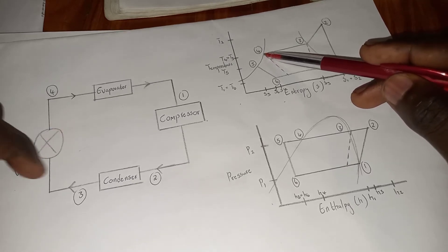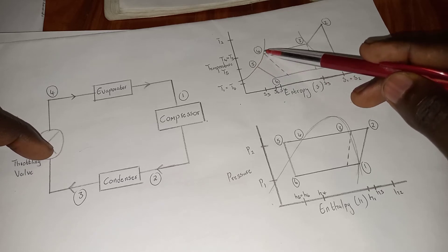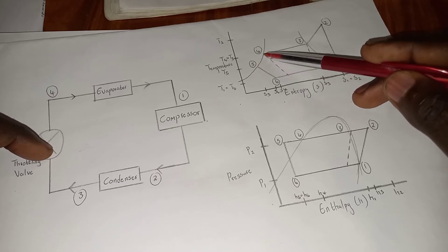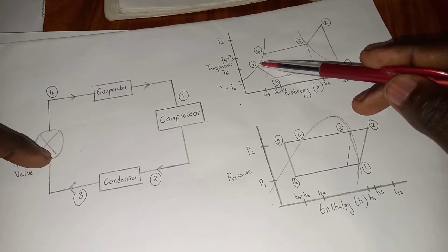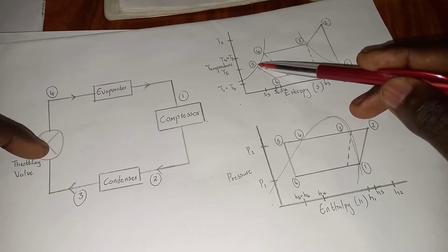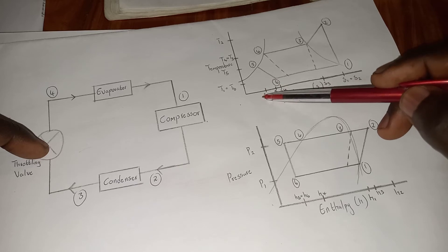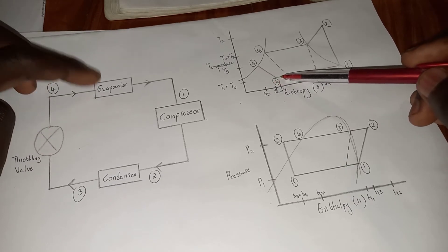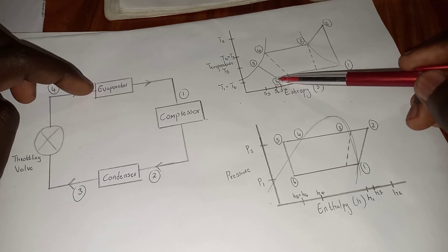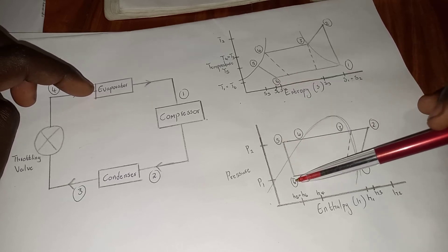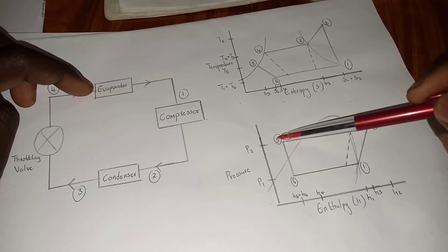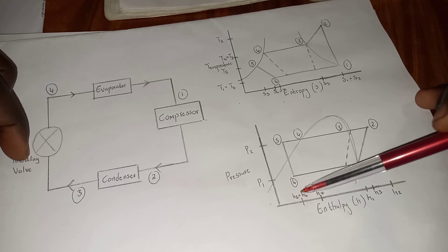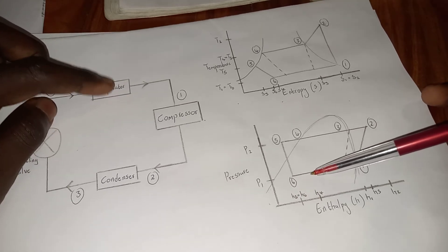After the condenser, you move to the throttling valve. From points four to five, this is where refrigeration is undergoing — the refrigerant is losing all its heat energy, which is why the entropy value here is the smallest. From point five we move to the evaporator, point six, where pressure drops from five to six but enthalpy remains the same.